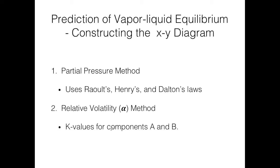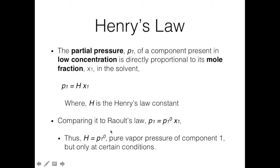This method uses key values for components a and b, assuming that the system is binary. Now let's revisit Henry's law. The partial pressure p1 of a component present in low concentration is directly proportional to its mole fraction x1 in the solvent. This looks similar to Raoult's law, but h here is the Henry's law constant, which is specific to that particular component.